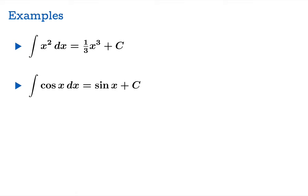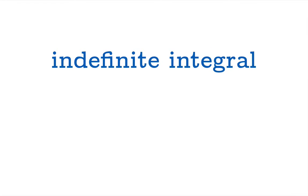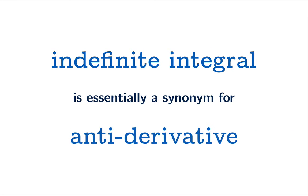Antiderivative of cos x, the indefinite integral of cos x, is sin x. Indefinite integral of 1/(1+x²) is arctan. And here is a general quadratic polynomial, and its indefinite integral or antiderivative is going to be this cubic polynomial. So indefinite integral is essentially a synonym for antiderivative.